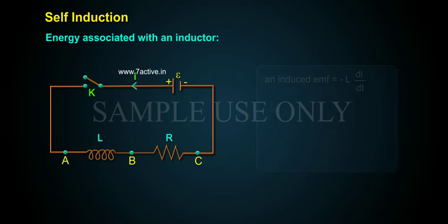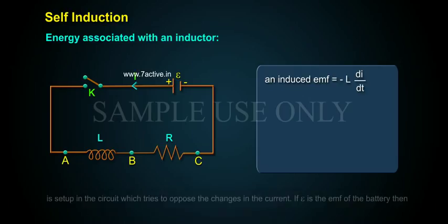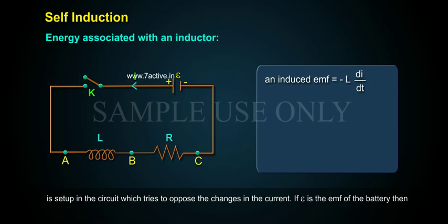and resistance R, an induced EMF equals minus L DI by DT is set up in the circuit which tries to oppose the changes in the current. If epsilon is the EMF of the battery,